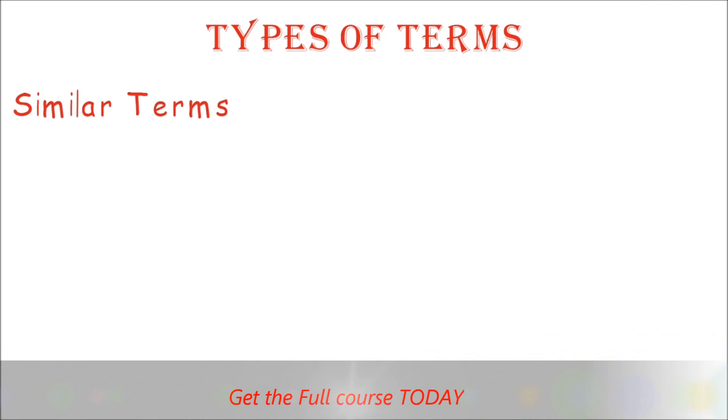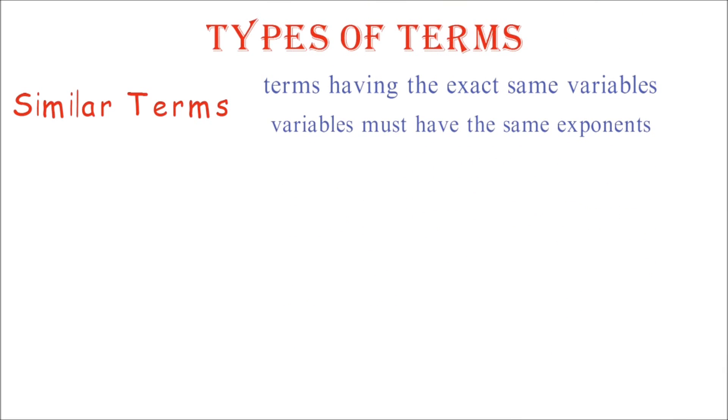Types of terms. Similar or like terms are terms having the exact same variables. These variables must have the same exponents. Remember, we said the variables are simply the letters.